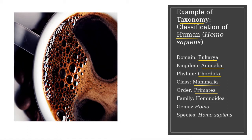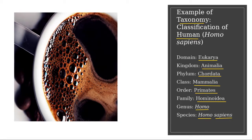Order Primate has several families; one of them is family Hominoidia, which is the family of humans. The family has several genera; one of them is called Homo — Homo means human. From this genus, the species of human that lives in this world right now is only one species, which is Homo sapiens. Sapiens means wise or kind. So this is the classification of humans, used as an example of taxonomy.